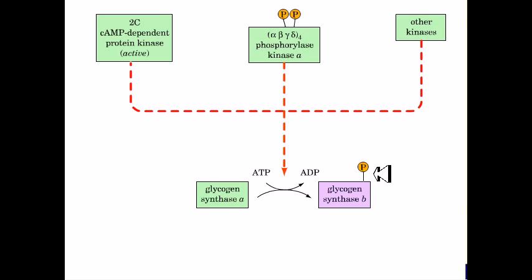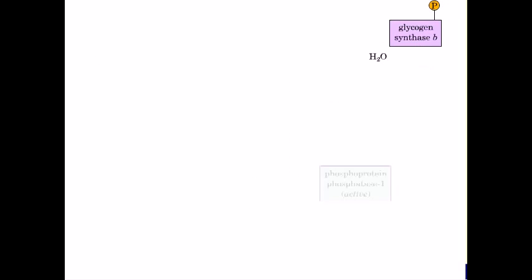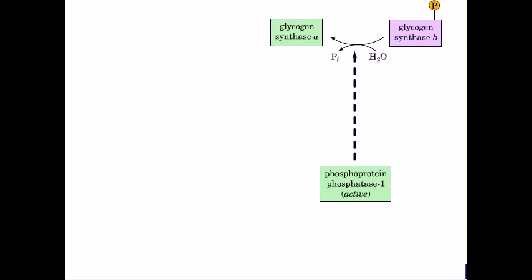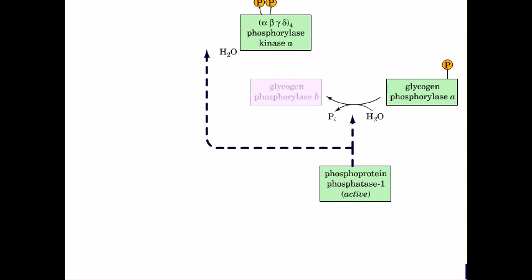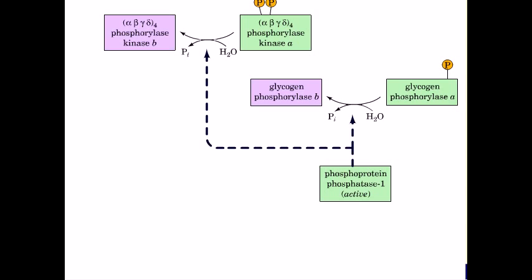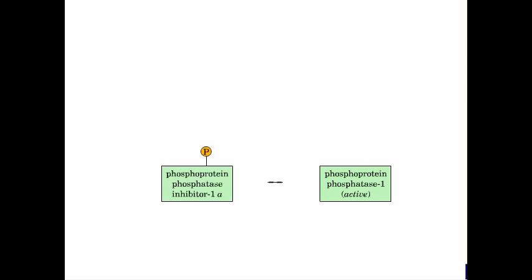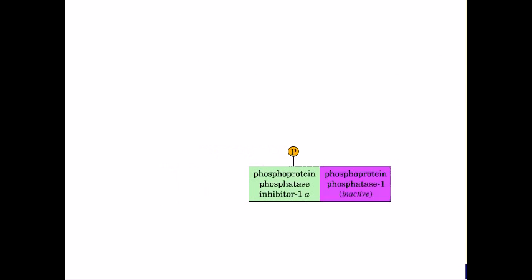Glycogen synthase is activated through dephosphorylation by phosphoprotein phosphatase 1, which involves hydrolysis of the phosphate bond. Glycogen phosphorylase and phosphorylase kinase are both inactivated through dephosphorylation by phosphoprotein phosphatase 1, which also involves hydrolysis.